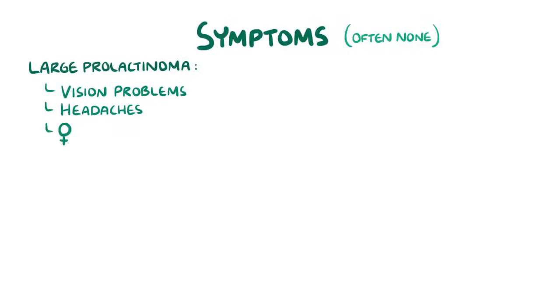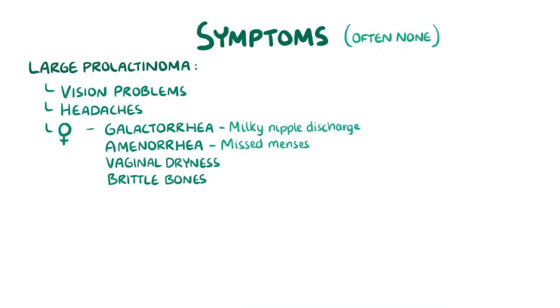In women, excess prolactin causes galactorrhea, which is milky nipple discharge, amenorrhea, which is missed menses, and vaginal dryness, and brittle bones in old age.